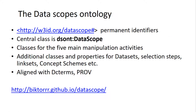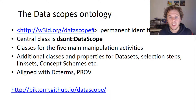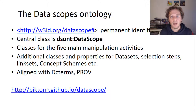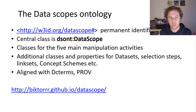The data scopes ontology is defined using permanent identifiers, W3ID, which point to a publicly available source. The central class is a data scope, as in the original model, and then we have five classes for the five data manipulation activities — a fairly straightforward translation of this model. There are also things like datasets, selection steps, link sets, and concept schemes, which allow for a richer representation of these data scopes.